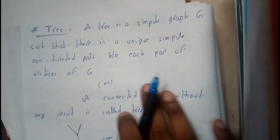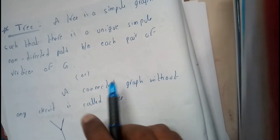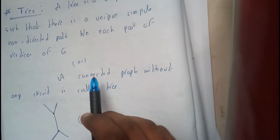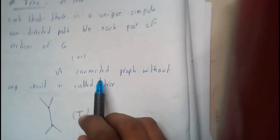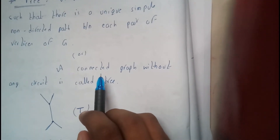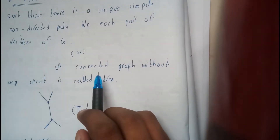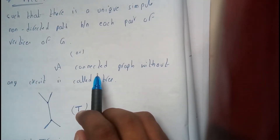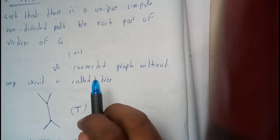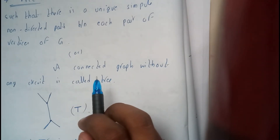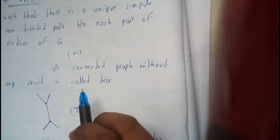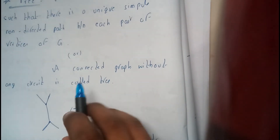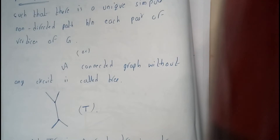For a simpler definition: a connected graph G without any circuits is called a tree. Here we are not finding any closed loops or circuits, hence it is a tree.